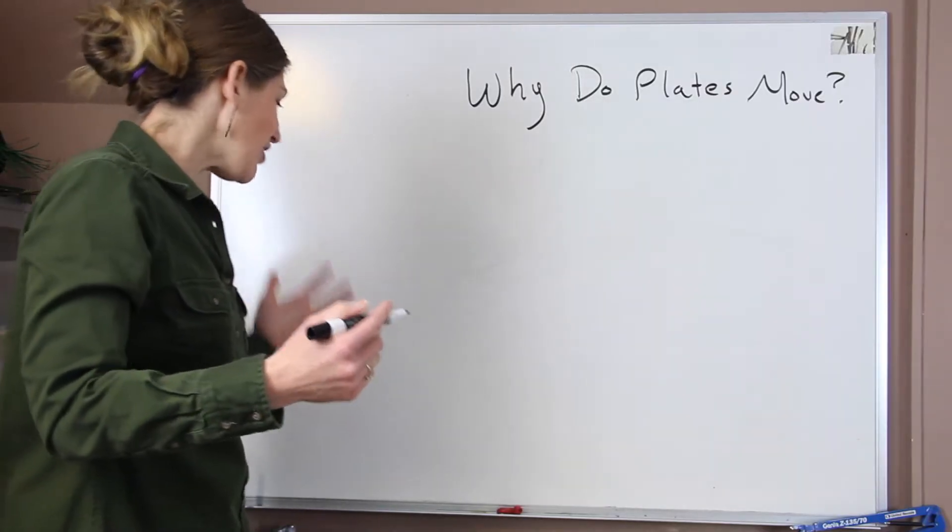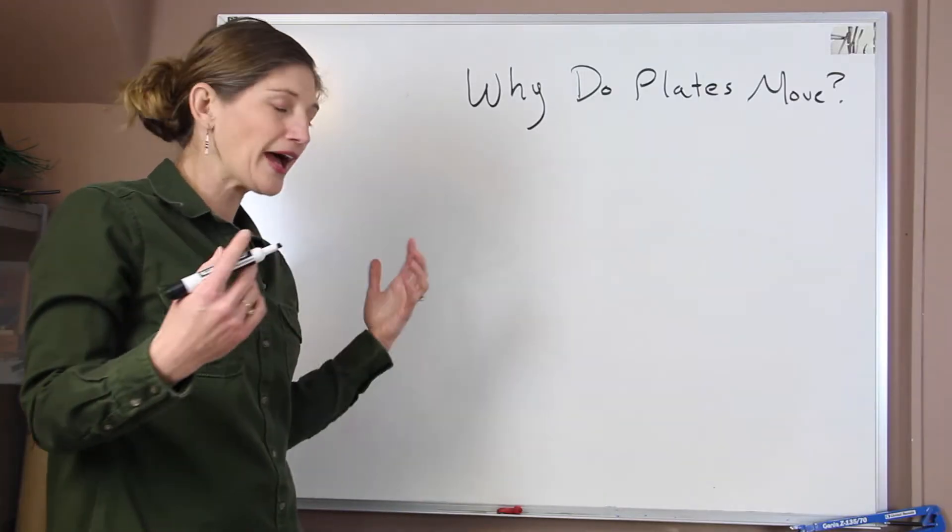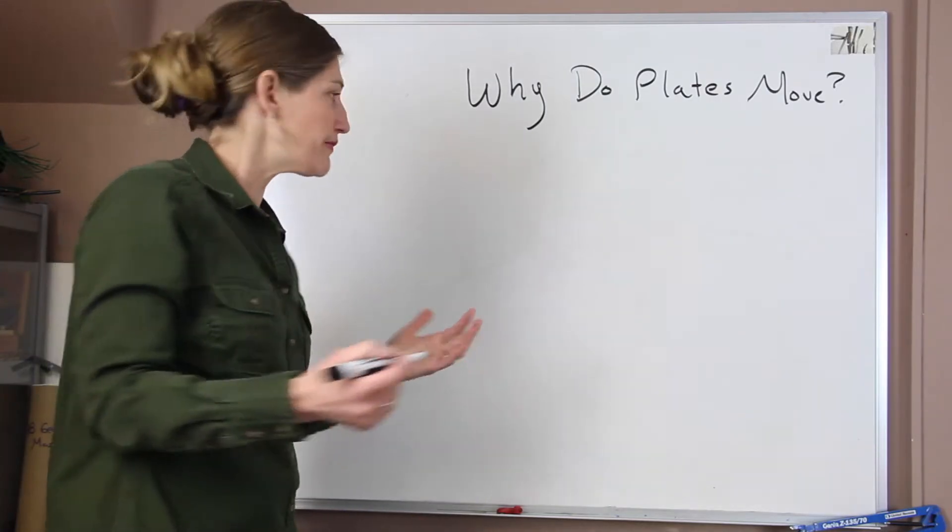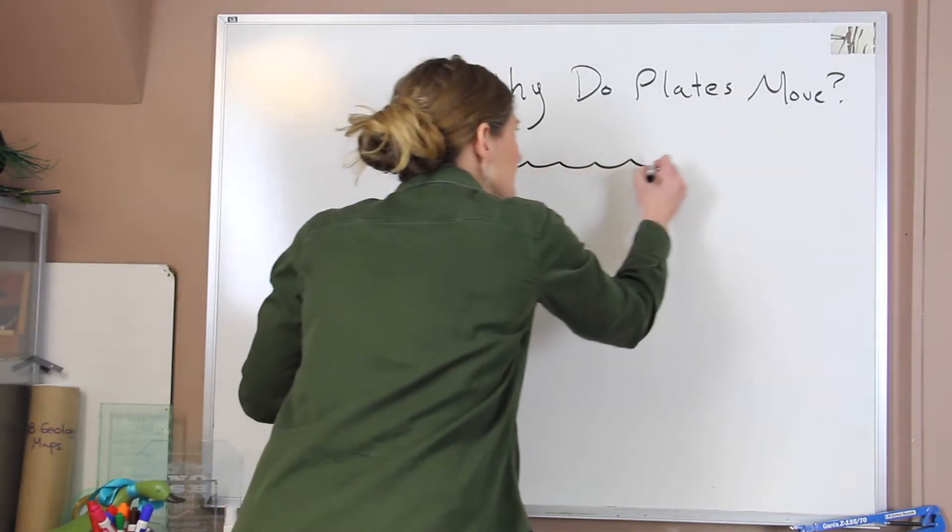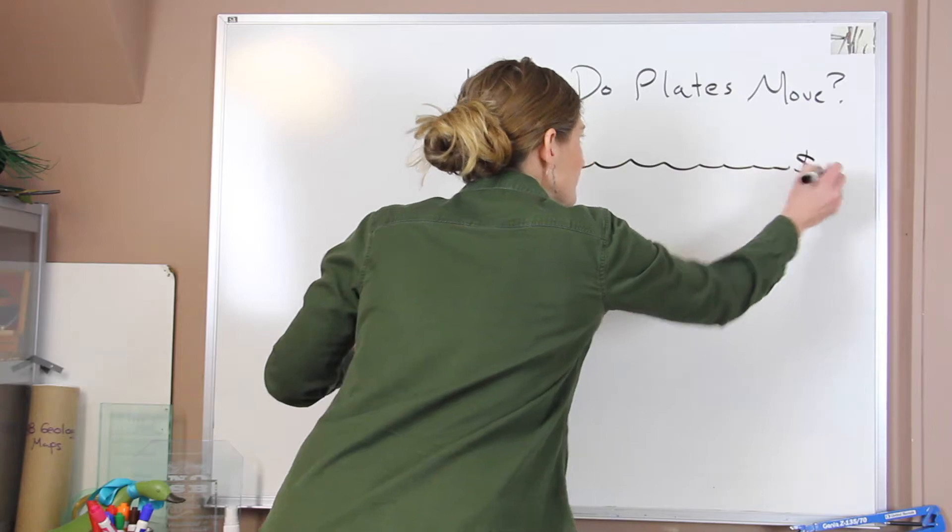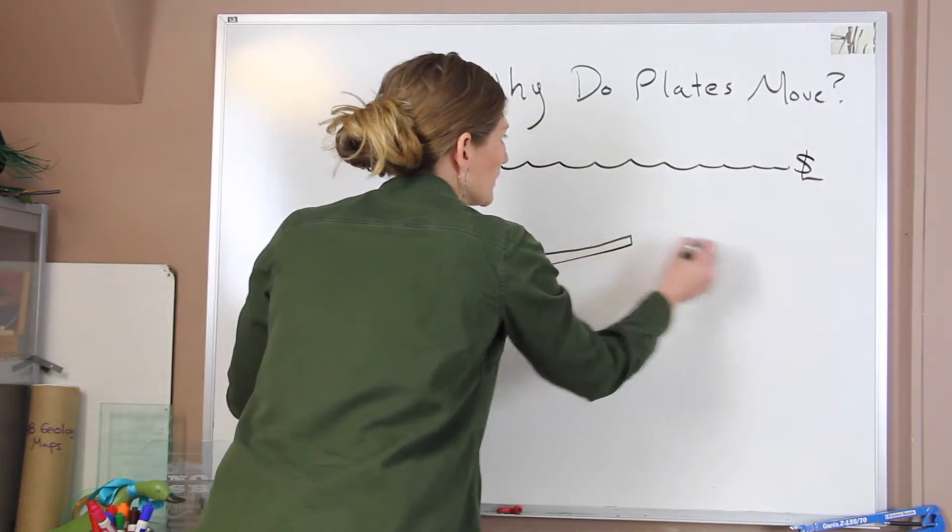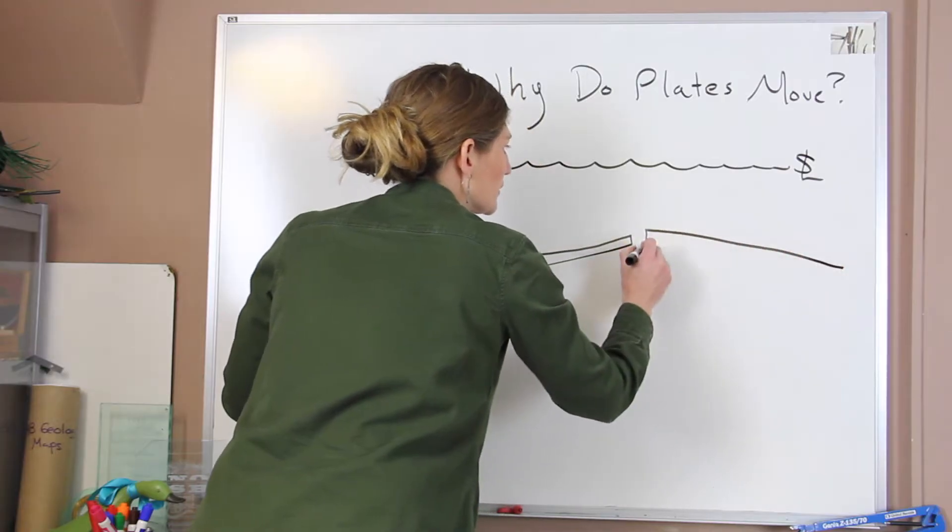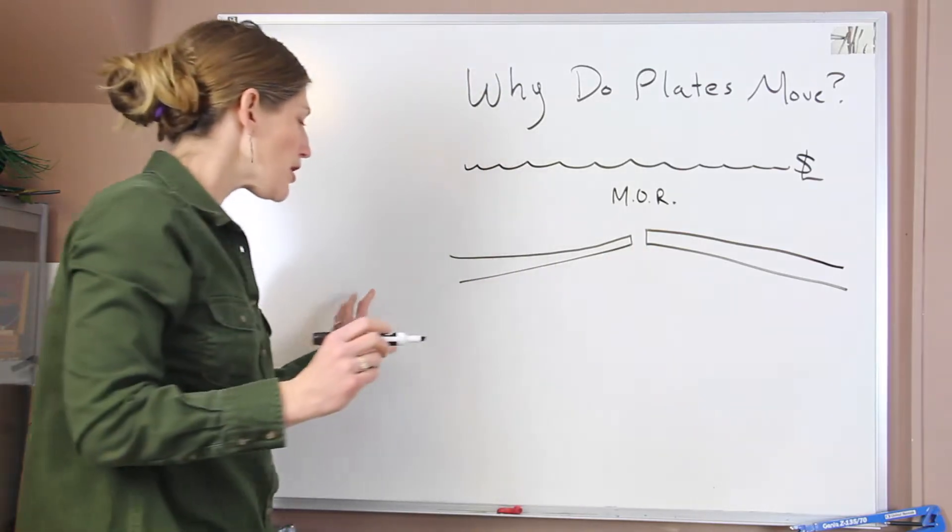So early on, when we looked at plate tectonic theory, we had people who figured out why it's moving. And when we go and we look at our oceans, so that will be our sea level. We'll draw our mid-oceanic ridge, M-O-R.